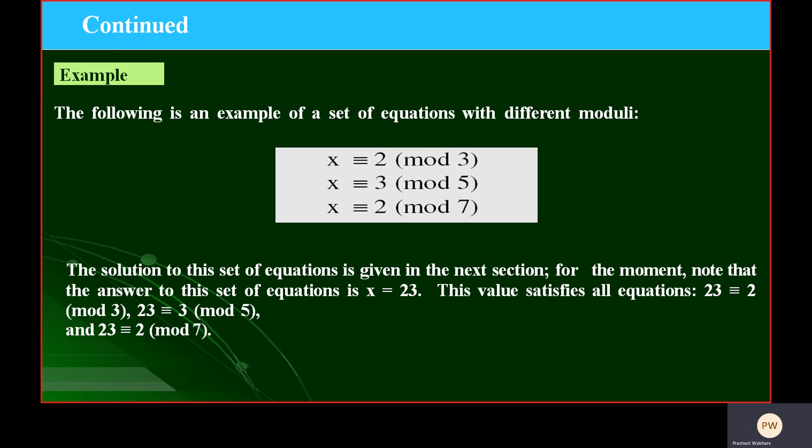In this given example, there is the same only one variable, that is X, and different moduli: 2 mod 3, 3 mod 5, and 2 mod 7. If we use Chinese Remainder Theorem in these equations, we have to find first one value that satisfies all the equations.